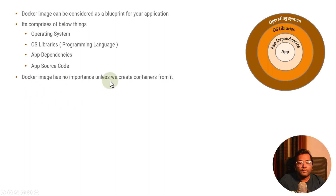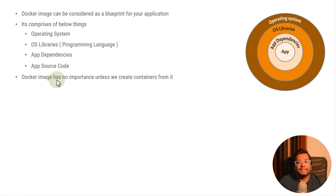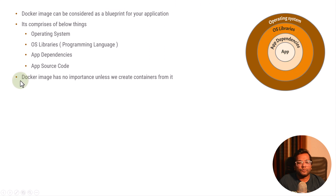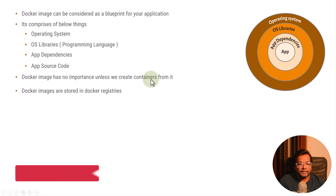A Docker image has no importance unless we create containers from it. A Docker image is just a set of data sitting somewhere on your hard disk. It has no importance; it is not a process. It is just data which says: this is the operating system, this is the OS libraries, this is the app dependencies, and this is the app source code.